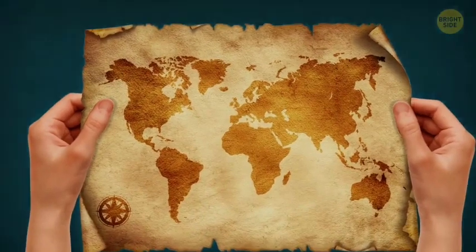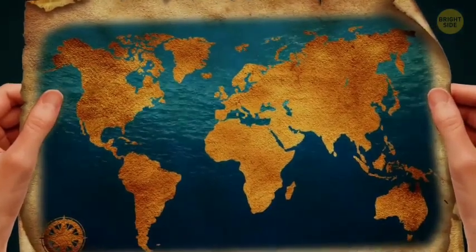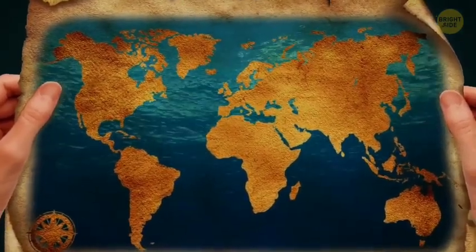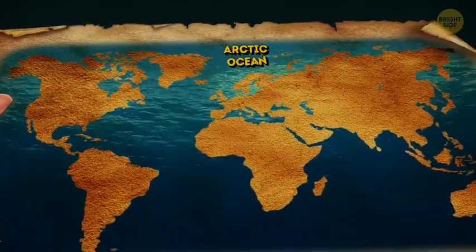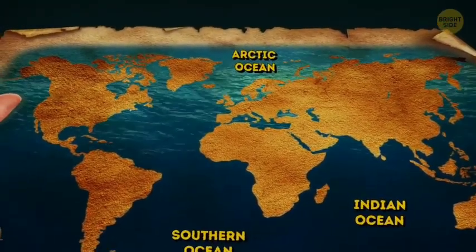So, when you look at the seas and oceans on the map, you might think that they just flow into each other. It seems like there's only one big ocean, and people just gave different names to its parts.